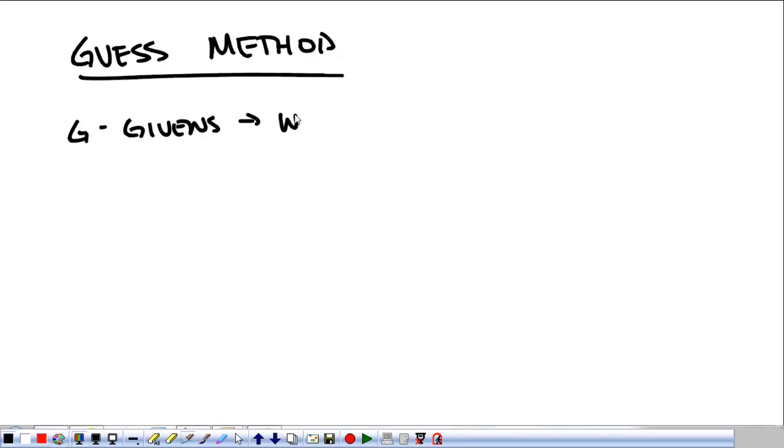Okay. When we solve problems, you're going to get a word problem. We're going to use the guess method. For the guess method, one, givens. We write down our given info.